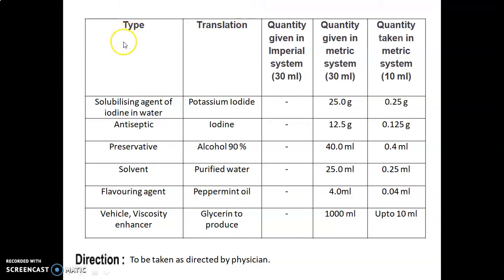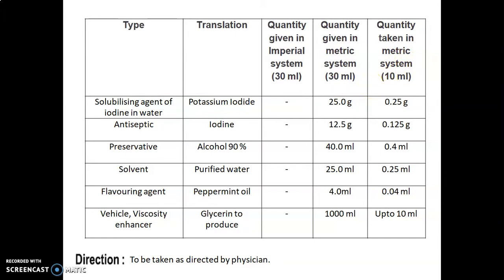The formulation table includes: type (role or category of ingredient), the name of ingredient, quantity given in the metric system for 1000 ml, and quantity taken in the metric system for 10 ml. First ingredient: Potassium iodide, used as a solubilizing agent for iodine in water.